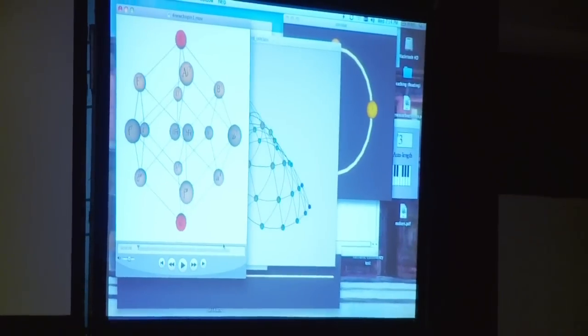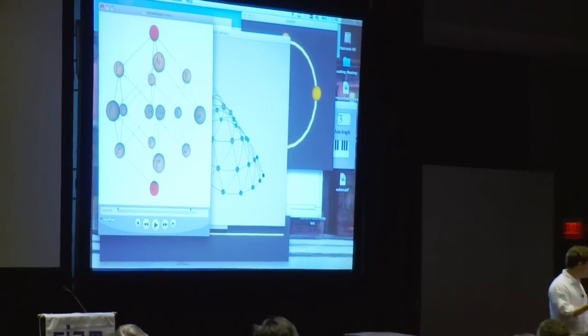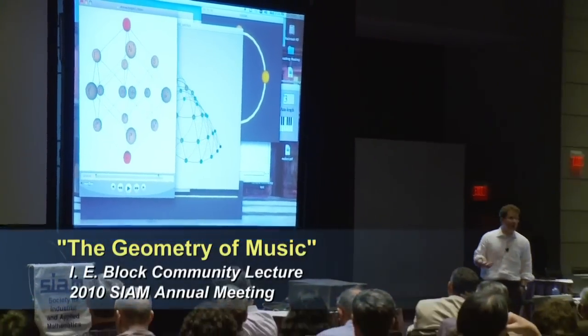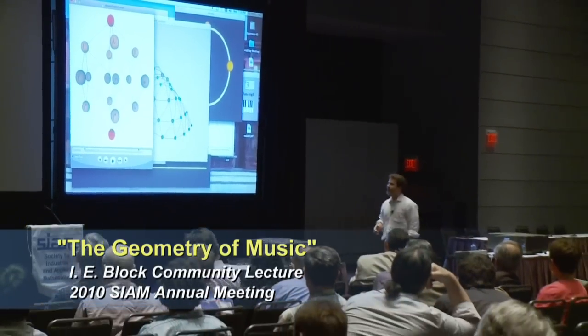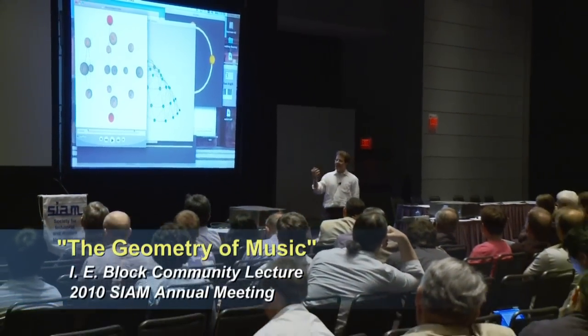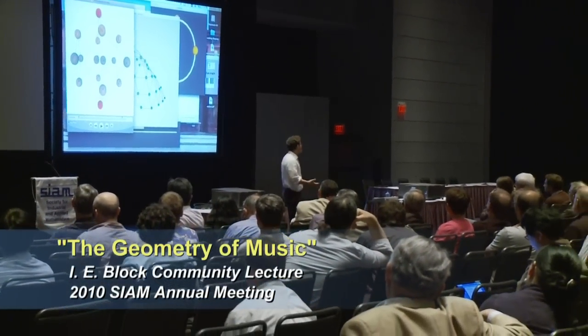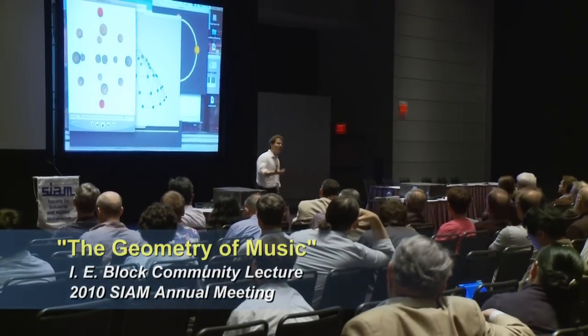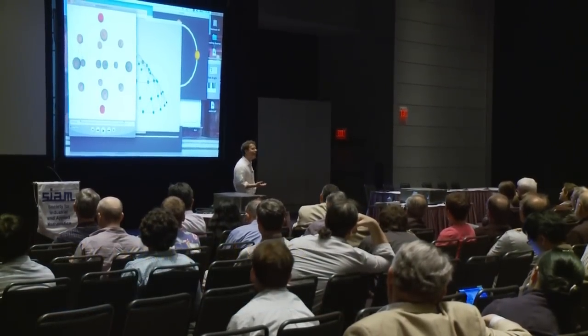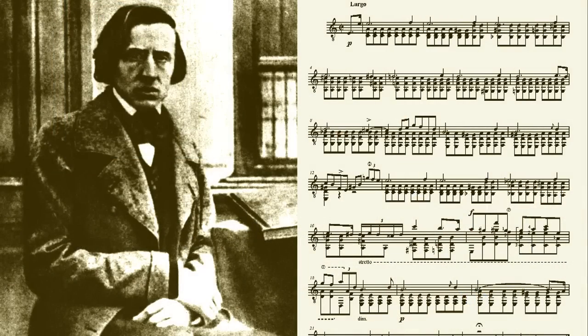I want to play for you a piece of Chopin's, the E minor Prelude. This is a piece written in 1828. It is one of the most mysterious and alluring pieces ever composed.